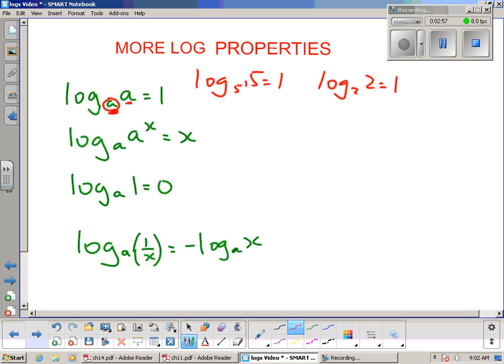This is an interesting one. If you've got log to the base a of a^x, this section here is equal to 1, but there's a rule in between here. Remember that rule that says x can come down the front?